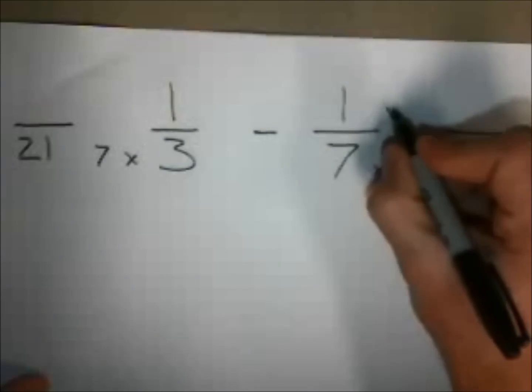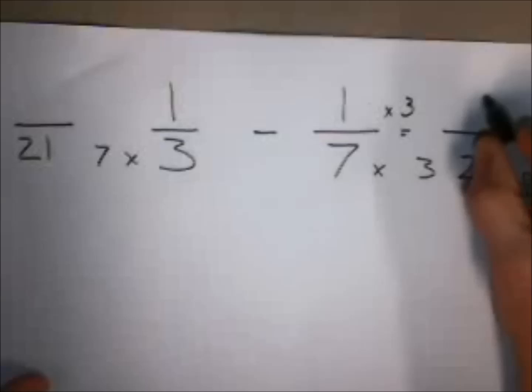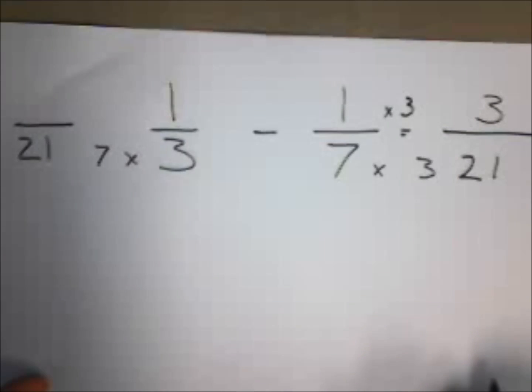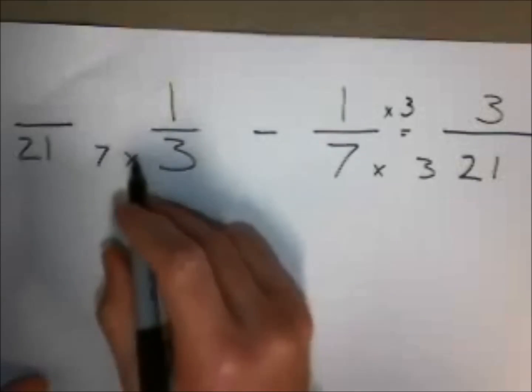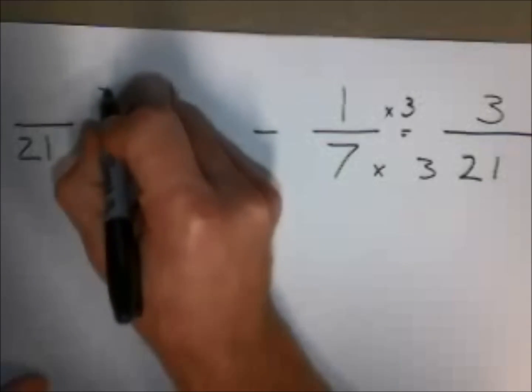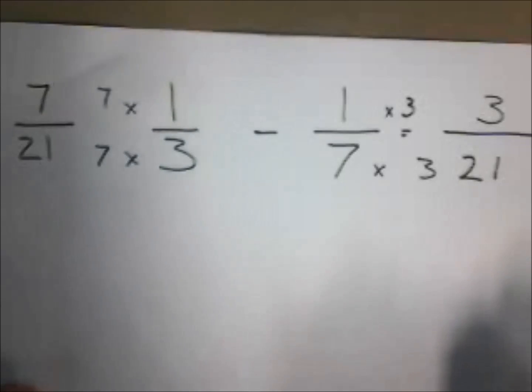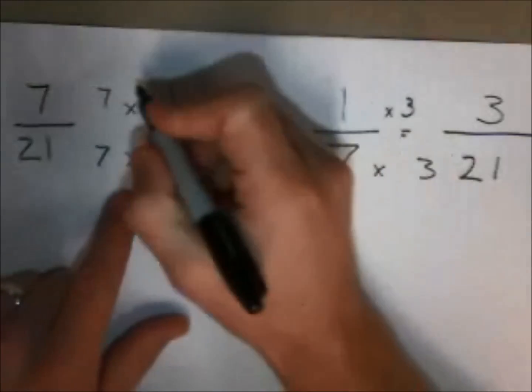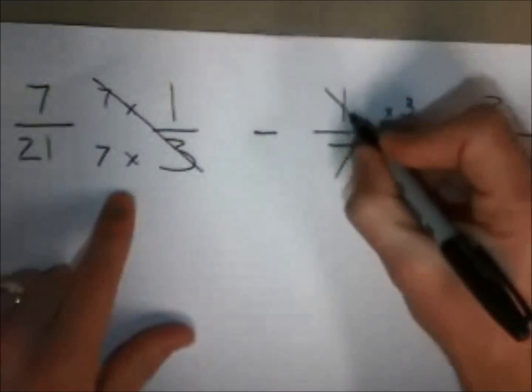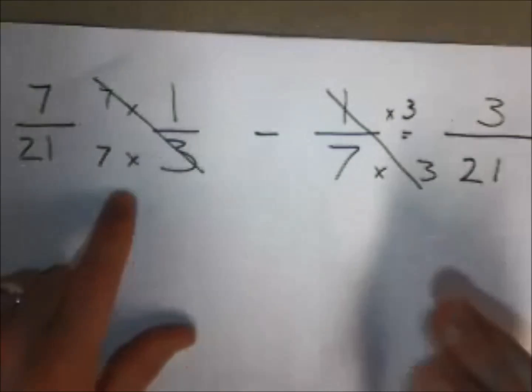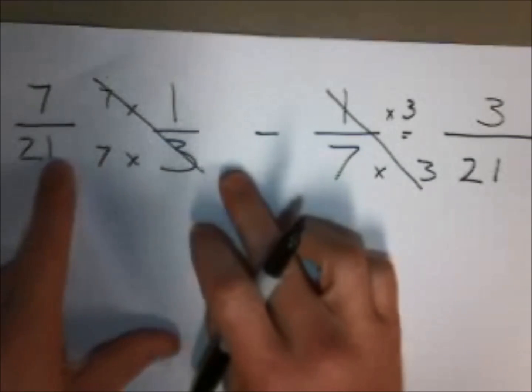On this side we are going to multiply the 1 times 3, that's going to give us a fraction of 3/21. This side we are going to multiply by 7, and that is going to give us a fraction of 7/21. Since these are equivalent, we're just going to kind of get these out of the way. We're going to leave them there so we know they're there, but now we can subtract.